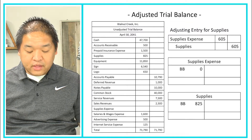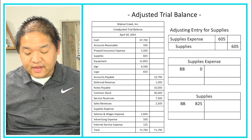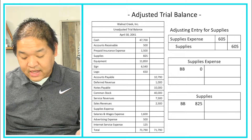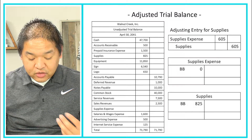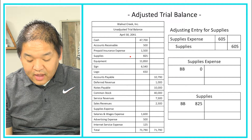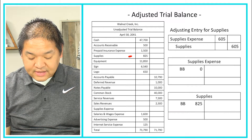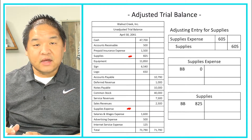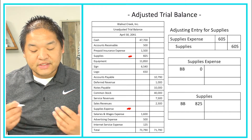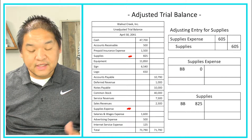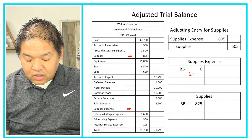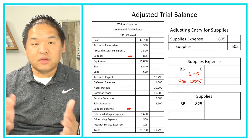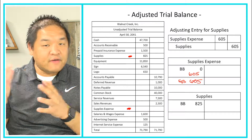Let's walk through an example. Here we have the adjusting entry for supplies that we did in the last couple of lessons. We have T-accounts with beginning balances and the unadjusted trial balance. On the unadjusted trial balance, supplies shows $8.25 and supplies expense shows zero. When we post the adjusting entry, we debit supplies expense $6.05 — that goes on the left side of the T-account — giving us an ending balance of $6.05.